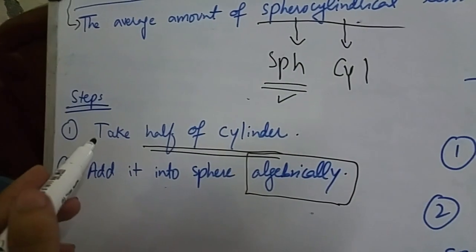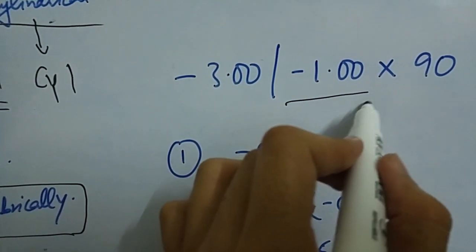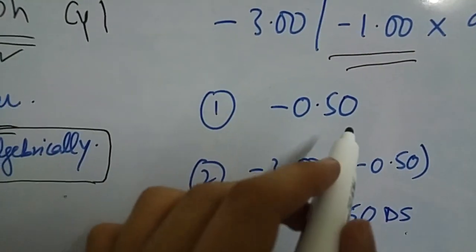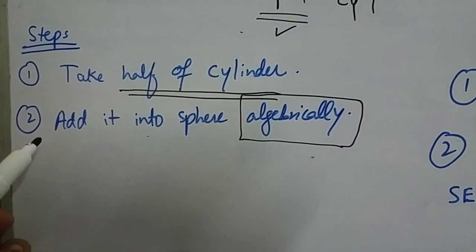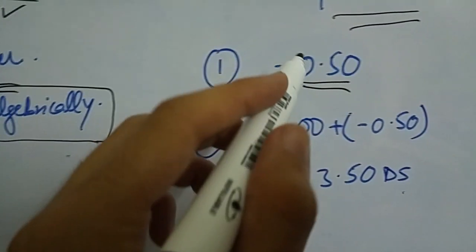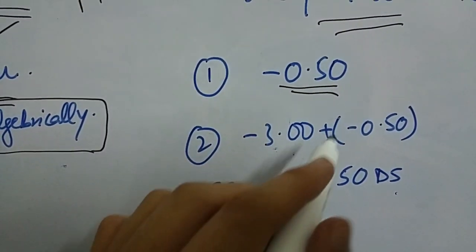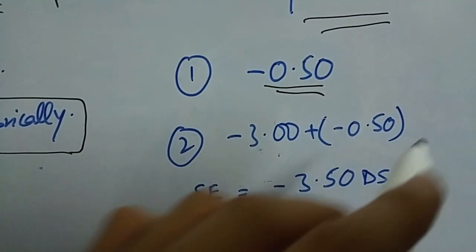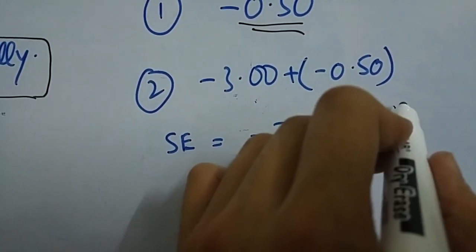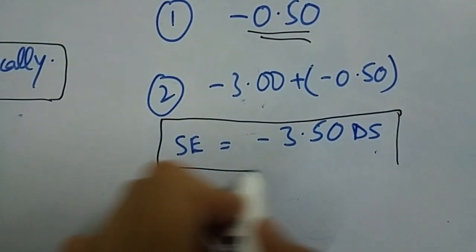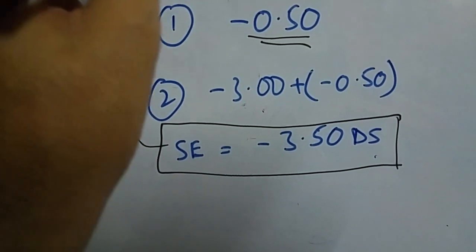So as I mentioned, the first step is take half of cylinder. So the half of minus 1 is minus 0.50. And then number 2 step was add it to sphere algebraically. So I will add minus 3 plus minus 0.50 and the result is minus 3.50. So minus 3.50 in this case is spherical equivalent of this prescription.